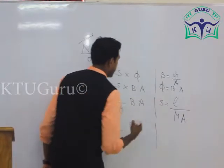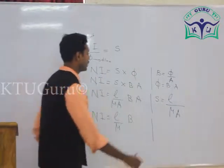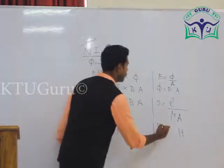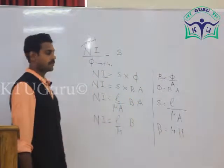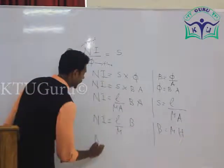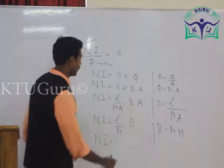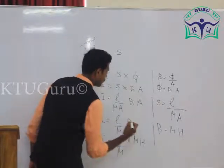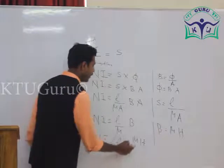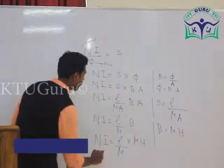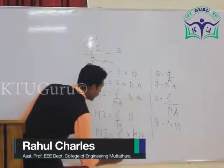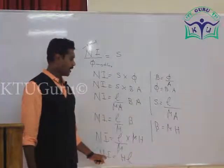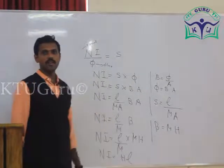Also, you know the other relation of B and H — that means the relation between magnetic flux density and magnetizing force H: B equals mu into H. Substituting that expression, NI equals L by mu into mu H. Here, mu and mu get cancelled. Therefore, NI equals H into L. It is an important relation. This NI is denoted by MMF, H is the magnetizing force, and L is the length of the magnetic circuit.